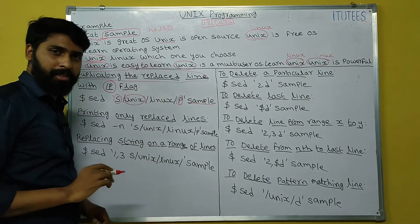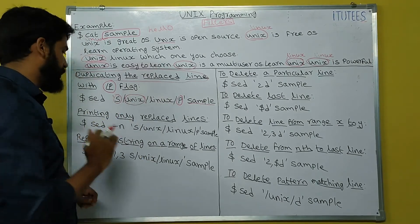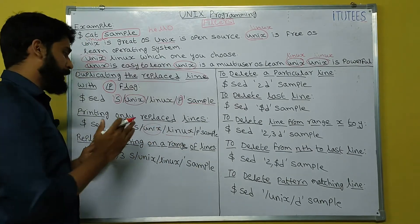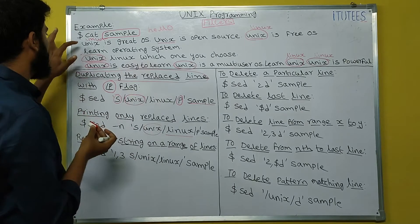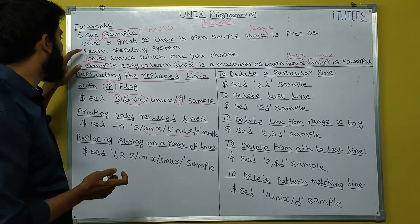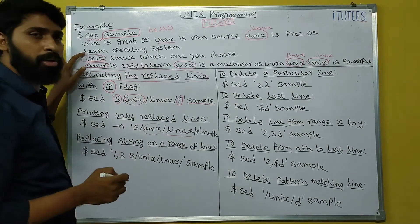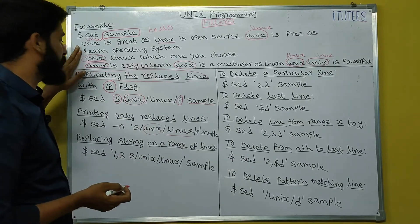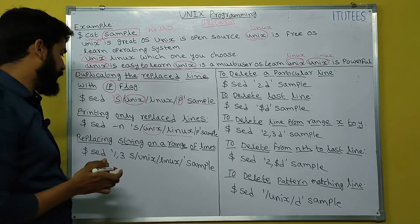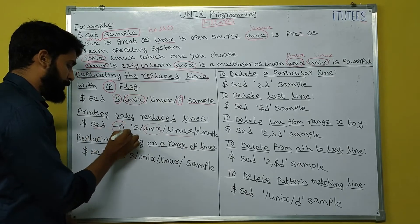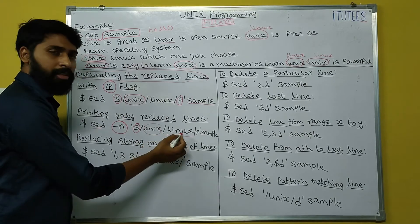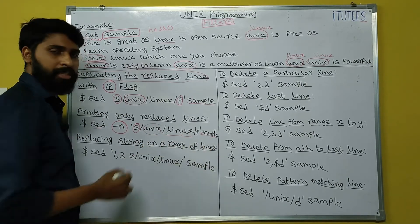Printing only the replaced lines: use SED with the -n option: SED -n 's/unix/linux/p' sample. With -n, only lines where substitution occurred are printed on standard output. Lines with no unix word are not displayed. The filename is sample.